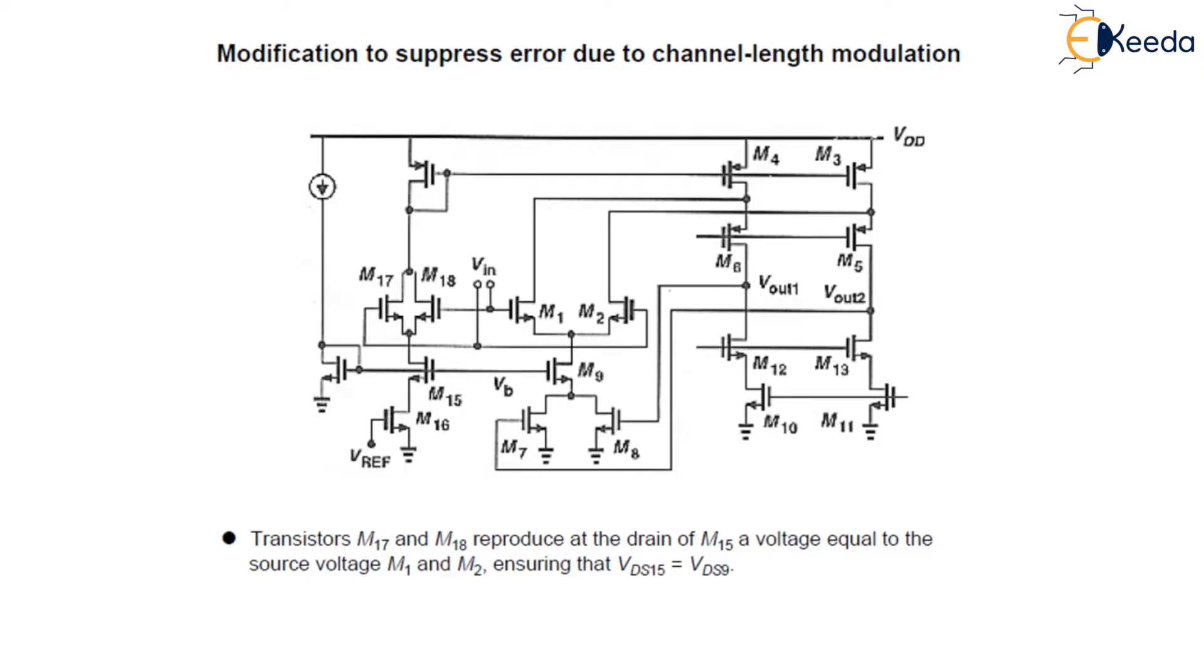This is not possible in the last circuit. To remove this error, we use M17 and M18 which reproduces at the drain of M15 a voltage equal to the source voltage of M1 and M2, ensuring that VDS15 is equal to VDS9.